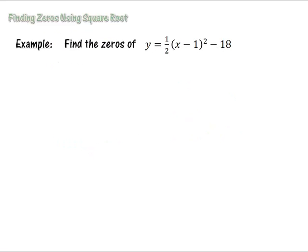We want to find the zeros of this function: y equals one half times (x minus 1) squared minus 18. If you'll remember, we'll go back to the steps from x-intercepts and we're going to replace the y with a zero.